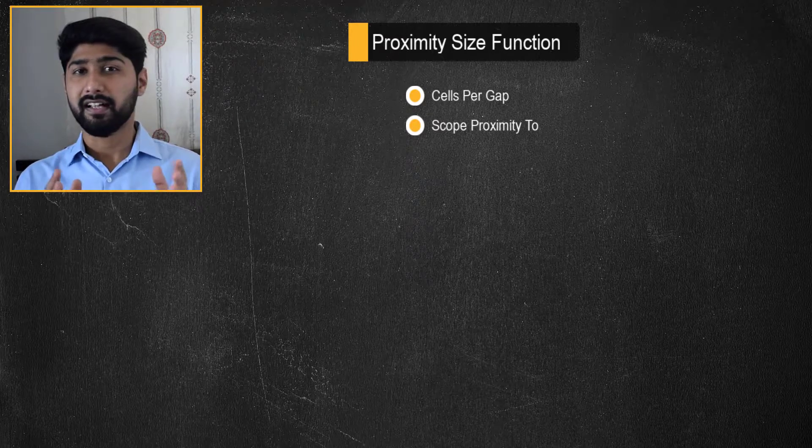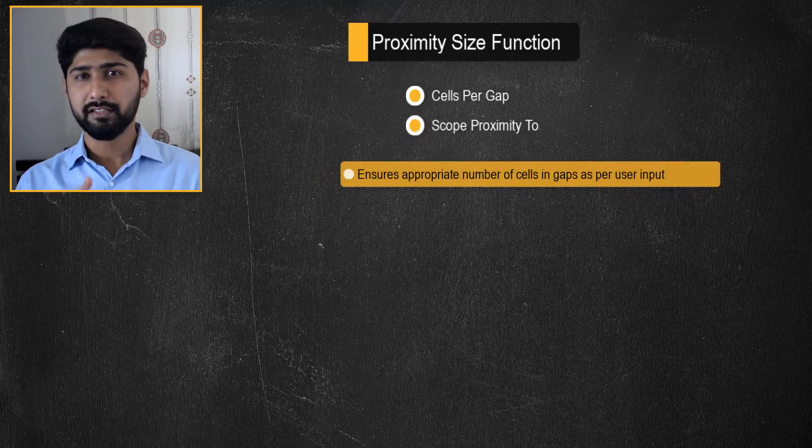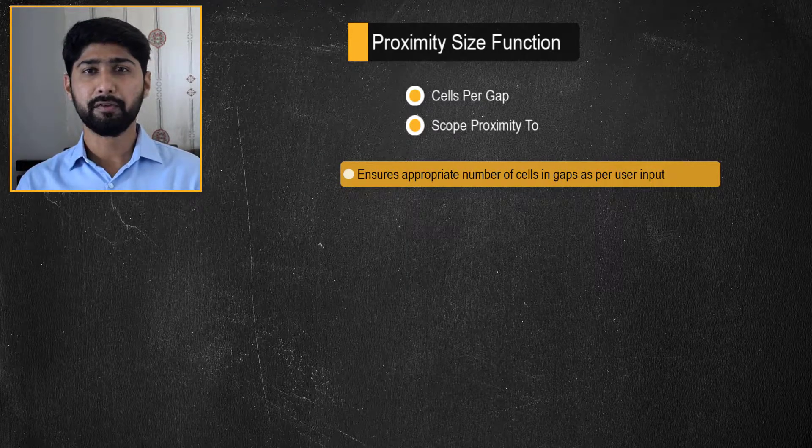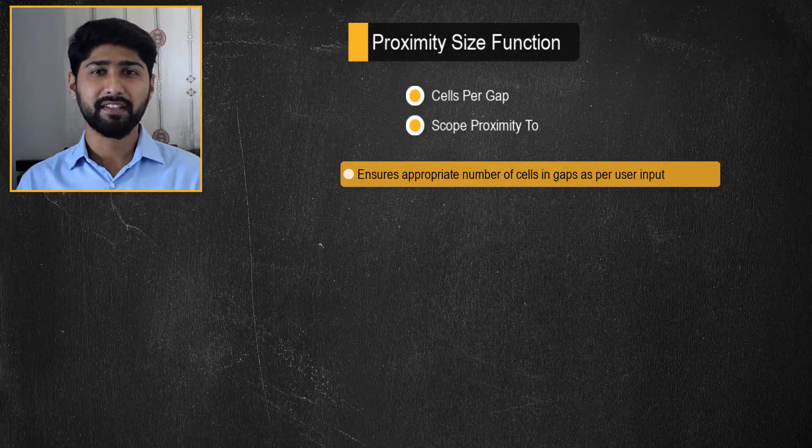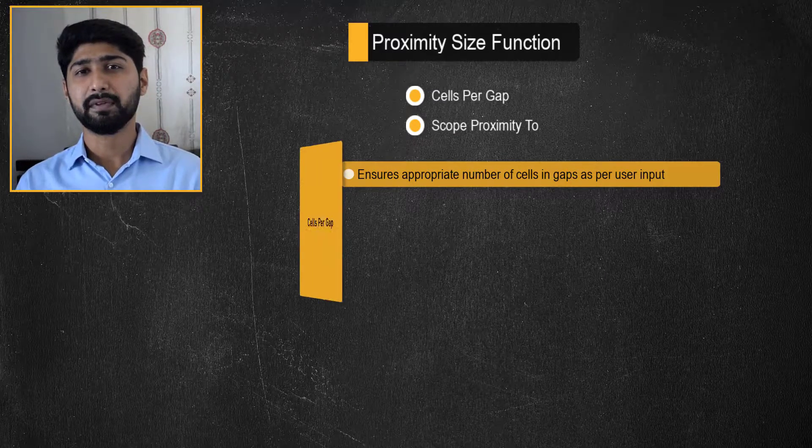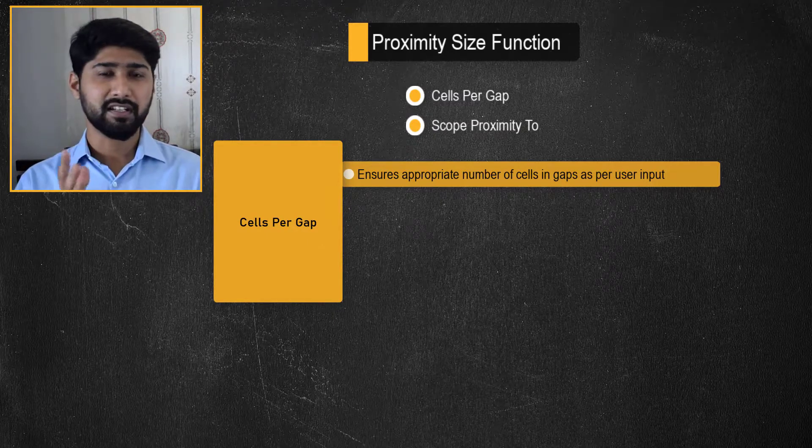The cells per gap and scope proximity to inputs are required to implement the proximity size function. This function ensures the presence of an appropriate number of cells in gaps as prescribed by the user through the cells per gap input. Note that this input can be a real number.